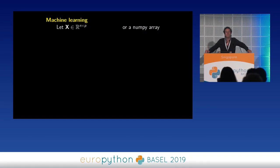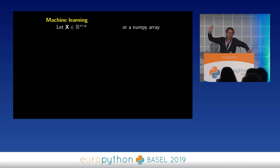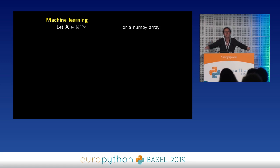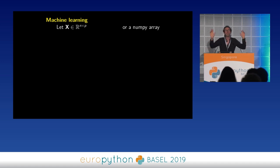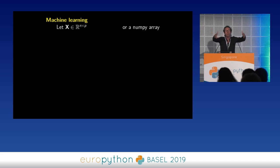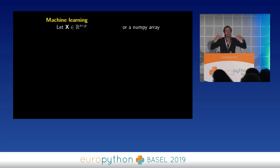Every machine learning research paper starts by 'let X be a numerical matrix that lives in a matrix space.' And if we're going to implement this, it's going to be: give me your data as a numpy array. We've always said you're going to have to transform your data from the kind of data you have to the numpy array, but that's your job, not ours.